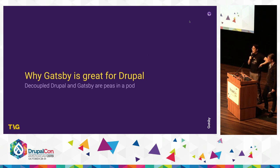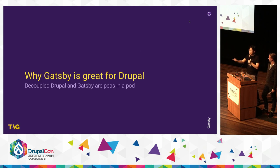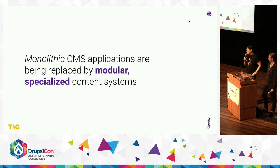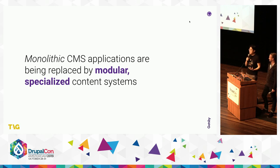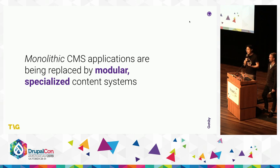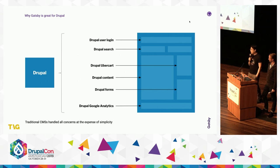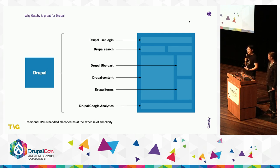Why is Gatsby so great for Drupal? A lot of us come from various CMS ecosystems. The way architectures are evolving in the CMS world is that the giant monoliths with inextricable layers are being replaced more and more by modular, specialized content systems — plug-and-play, interchangeable parts that allow you to build a much more flexible CMS not restricted to a single ecosystem. Back in Drupal 7, 6, or 5, a lot of functionality was handled by the Drupal ecosystem — things like user login, search, Ubercart for e-commerce, form handling, and the Google Analytics module.